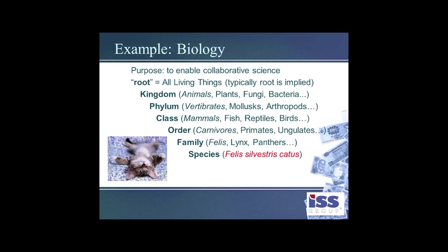Here's an example from biology. The purpose is to enable collaborative science across the world. The root is all living things, and within that we have kingdom, phylum, class, order, family, and species. Within the kingdom of animals, you can go to vertebrates, then the class of mammals, then the order of carnivores, then the family of Felidae — the cat family — which contains a number of species, among them Felis silvestris catus, or the common house cat.